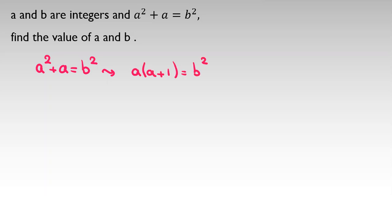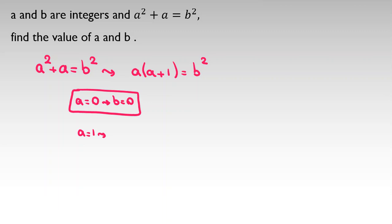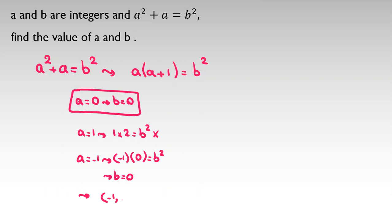Checking small values: if a equals zero, then b is zero, so one answer is a=0, b=0. If a equals one, then one times two equals b squared, which is a contradiction. If a equals negative one, then negative one times zero equals b squared, so b is zero — giving the solution a=-1, b=0.